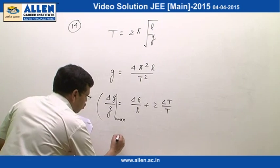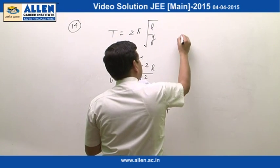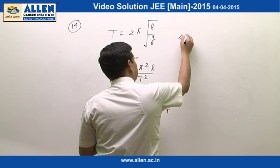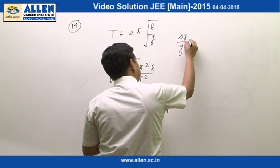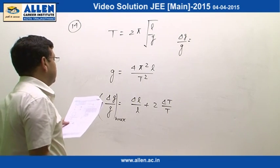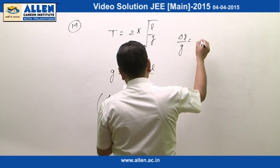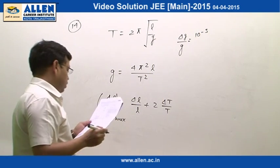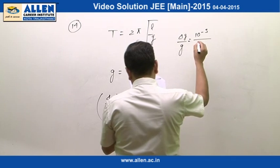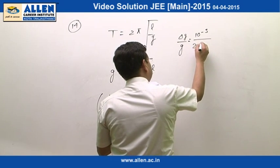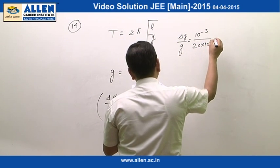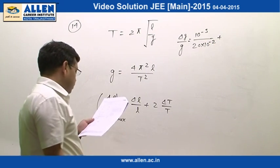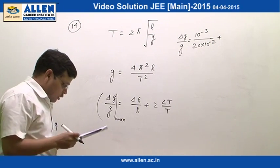Now, if you put the value of delta l and l, delta T and T, delta g over g turns out to be - delta l is given to be 1 mm and the length is 20 cm, so it is 1 over 20.